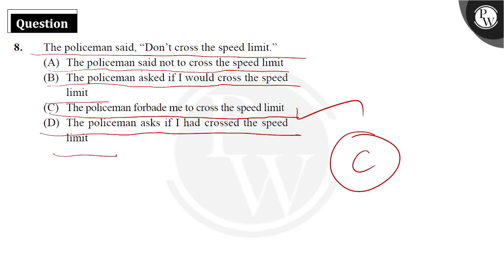Reason being, 'said' is your second form of verb. This change is made and we have seen here one instruction that the policeman has given: Don't cross the speed limit. Forbade word is the suggestion and instruction.